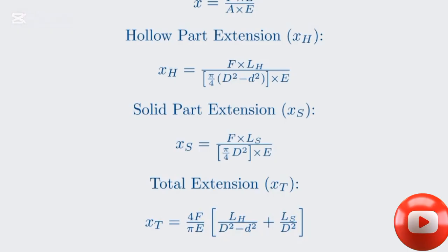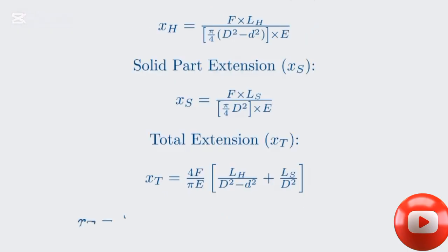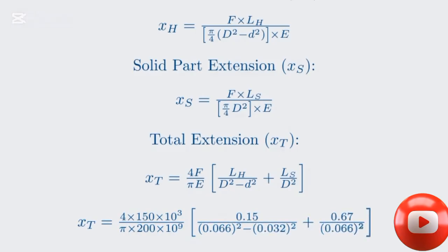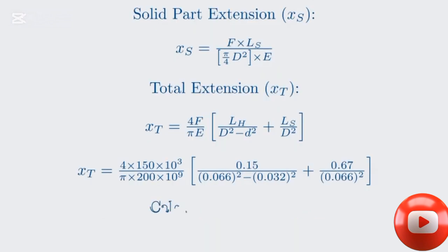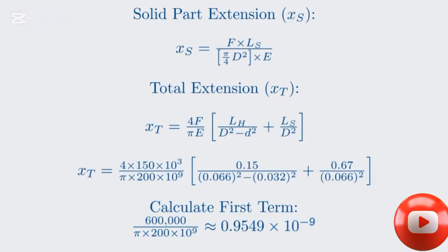Let's substitute all our known values into this equation. We have 4 times 150 times 10 to the third, divided by pi times 200 times 10 to the ninth. This whole term is then multiplied by the bracket. Let's calculate the value of the first term, the part before the bracket. The numerator is 600,000, and the denominator is approximately 628.3185 times 10 to the ninth. Dividing these gives us approximately 0.9549 times 10 to the negative ninth. Let's hold on to this value.